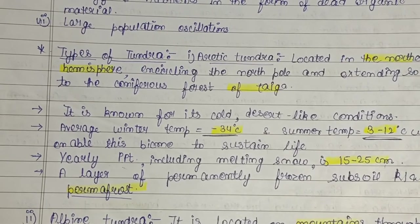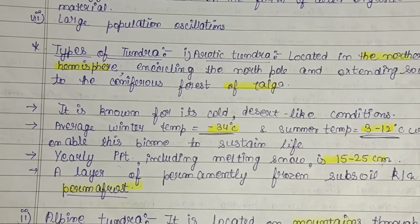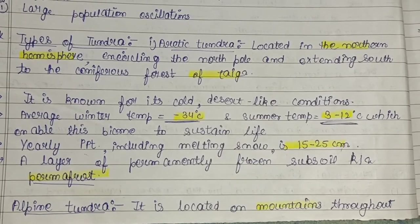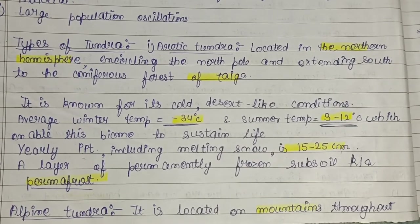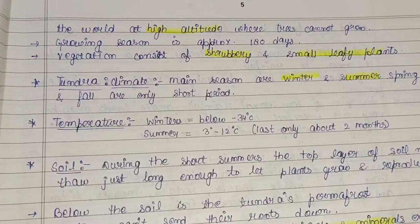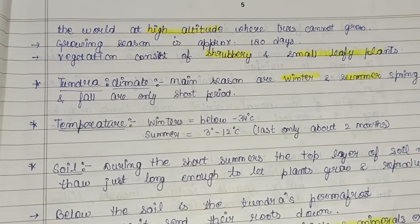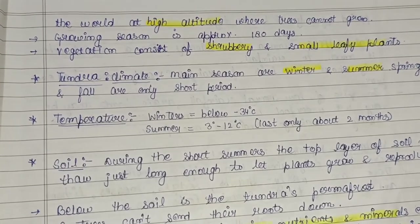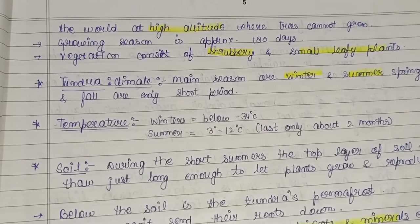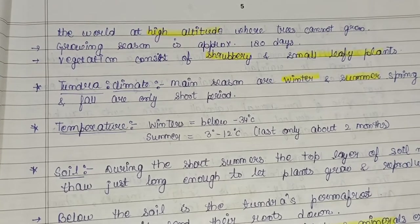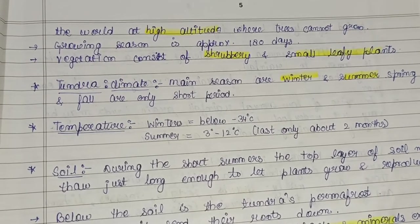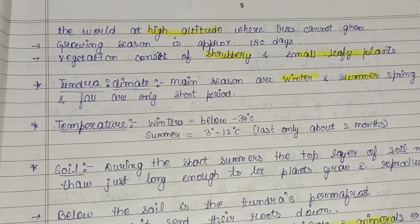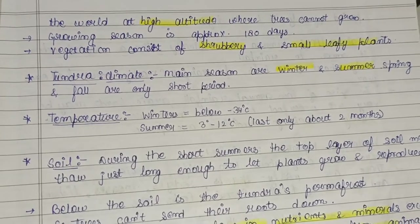A layer of permanently frozen subsoil known as permafrost is present in the arctic tundra. Permafrost is ground that continuously remains below zero degrees Celsius for two or more years. Alpine tundra is located on mountains throughout the world at high altitudes where trees cannot grow. The growing season is approximately 180 days, and vegetation consists of shrubbery and small leafy plants, not large trees.